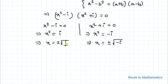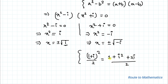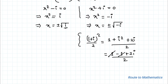Now in the next step, I am going to substitute the value of i as 1 plus i whole square divided by 2. This equals 1 plus i squared plus 2i divided by 2, which equals 1 minus 1 plus 2i divided by 2. The 1 minus 1 cancels out, leaving 2i divided by 2, which equals i.